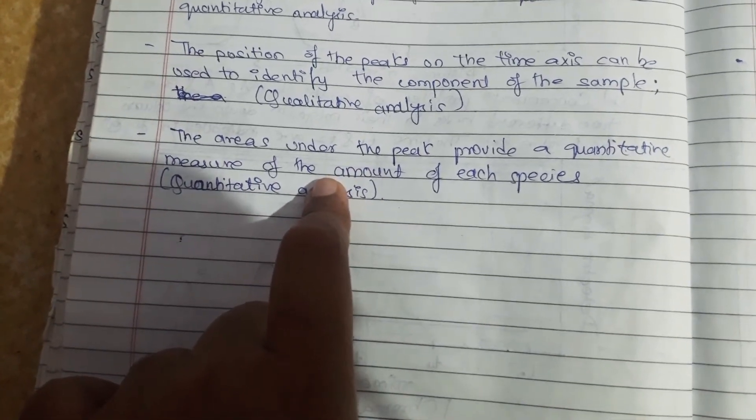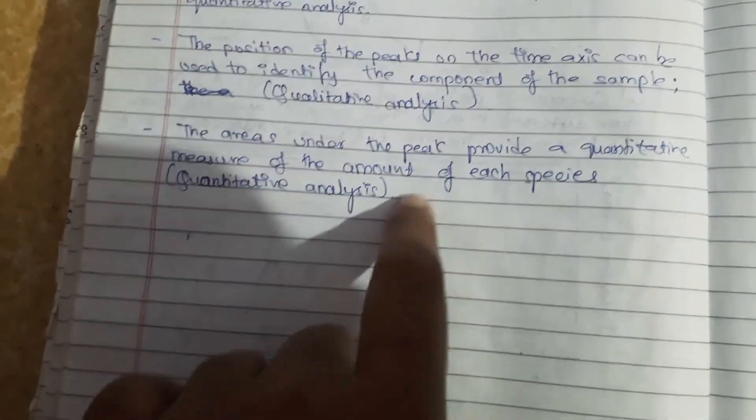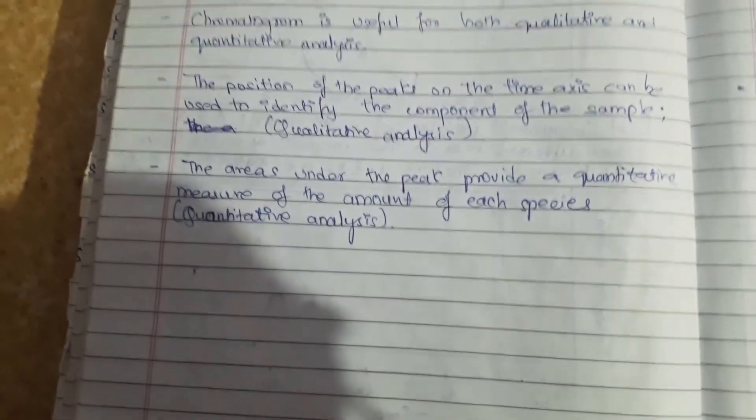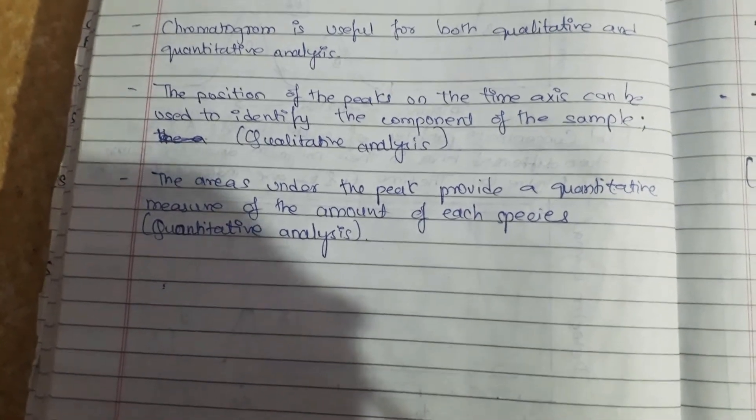The area under any peak can be used to determine the amount of that chemical species. This is how you do quantitative analysis.